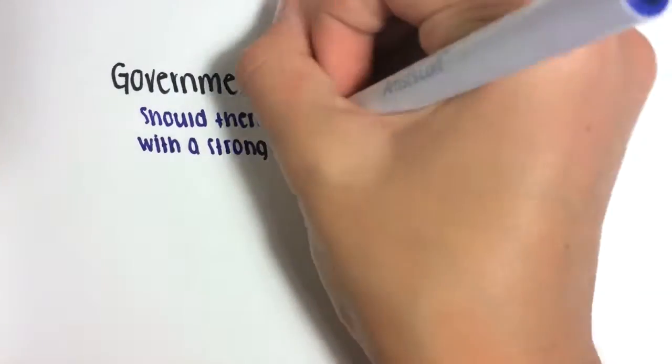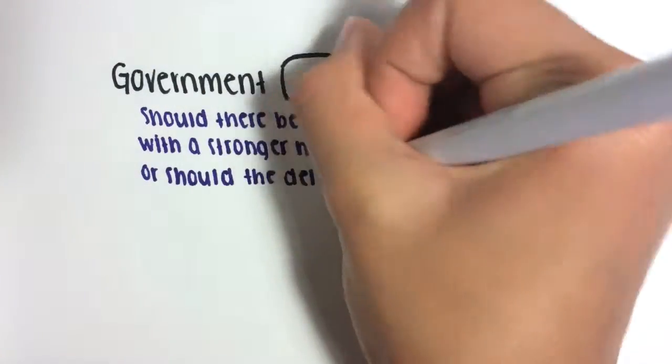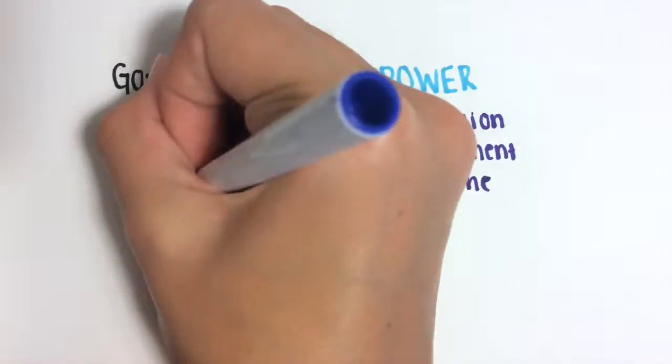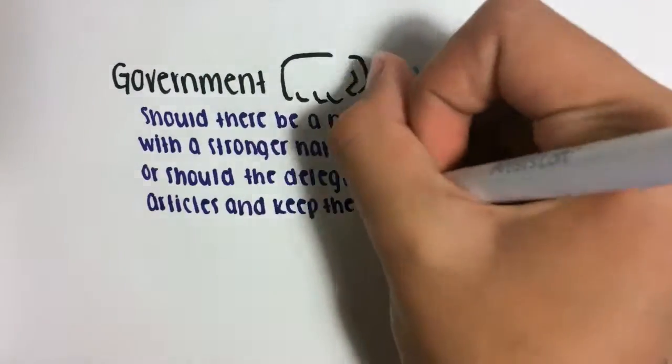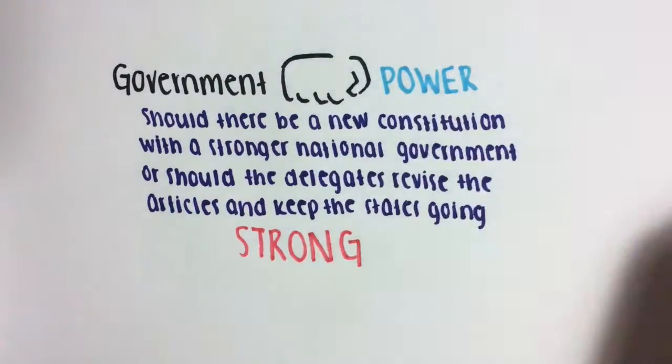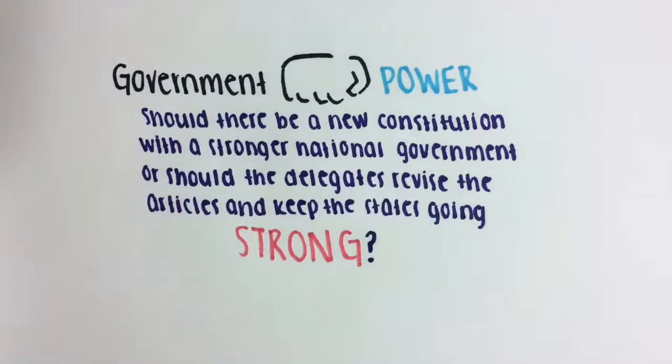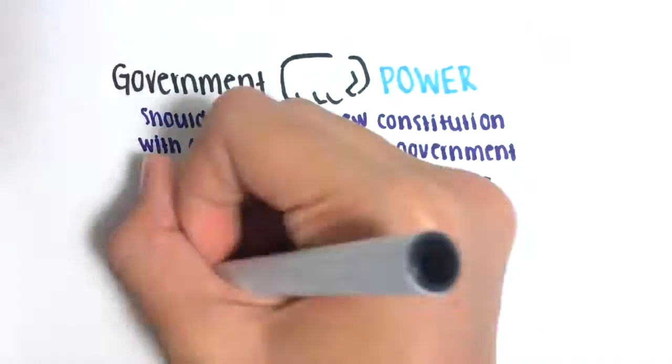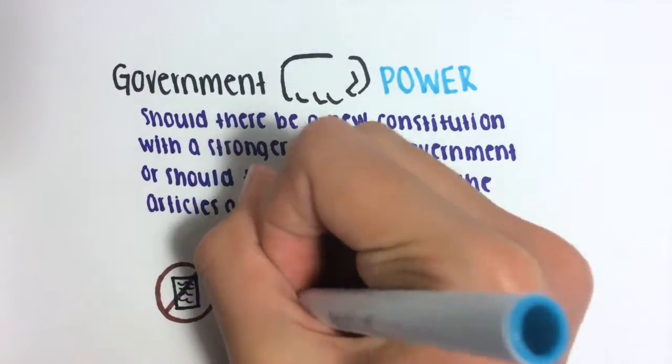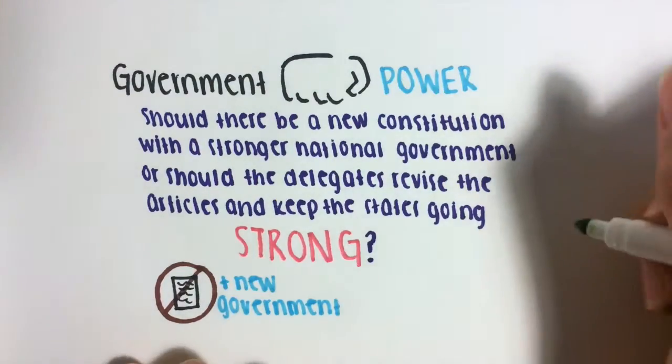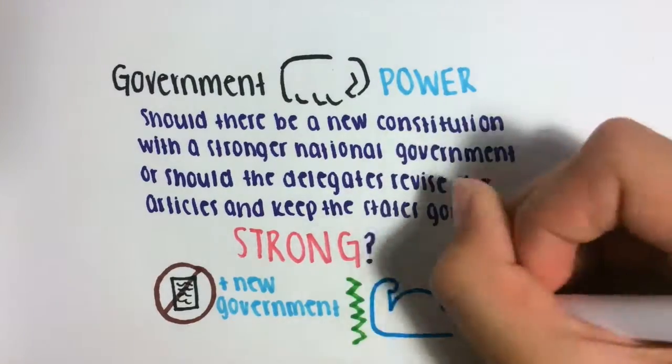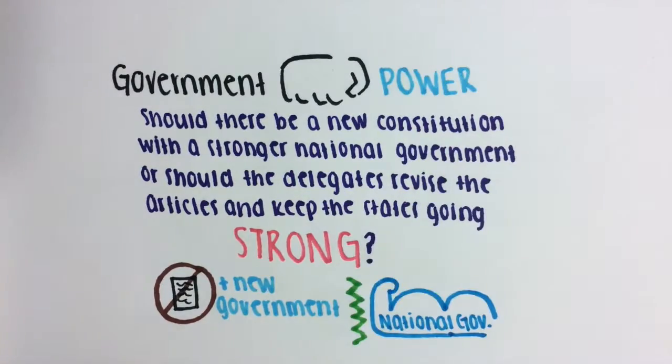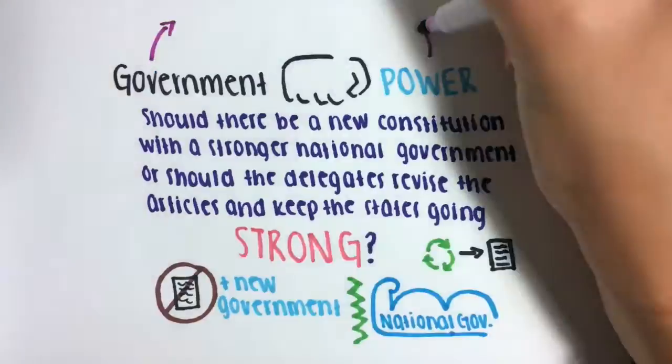The first issue with the Articles was government power. Should there be a new constitution with a stronger national government, or should the delegates revise the Articles and keep the states going strong? Side 1 said that they should get rid of the Articles and establish a new government, while building a strong national government. Side 2 said that they should revise the Articles and keep the power between the states. The final result was to make the national government more powerful in certain areas.